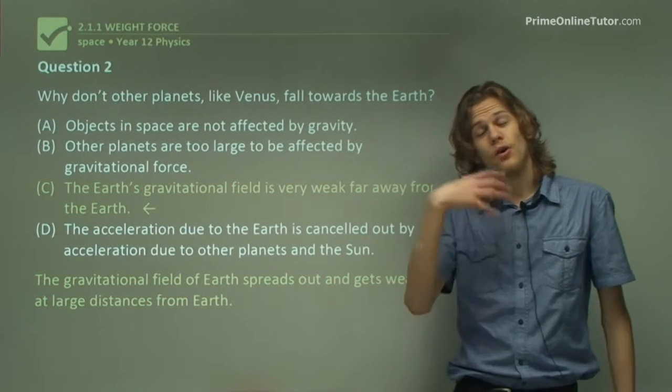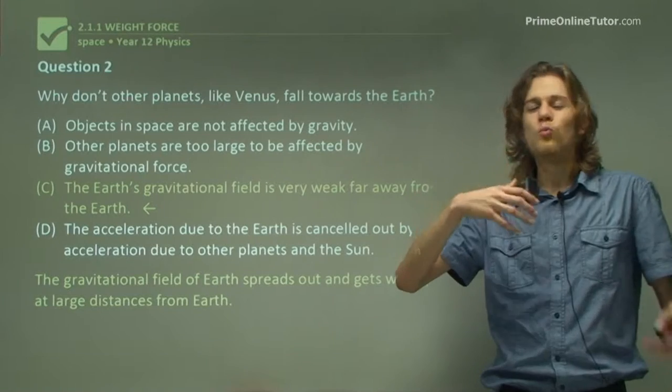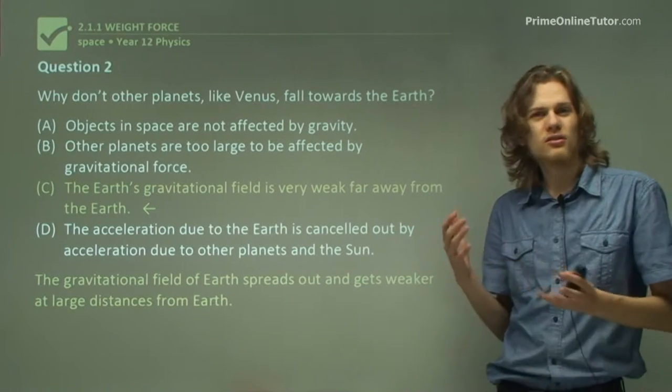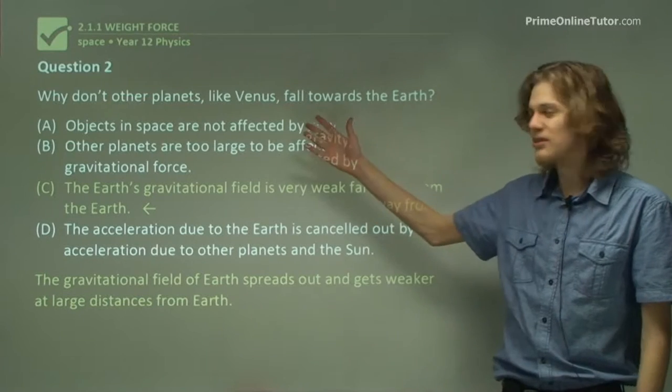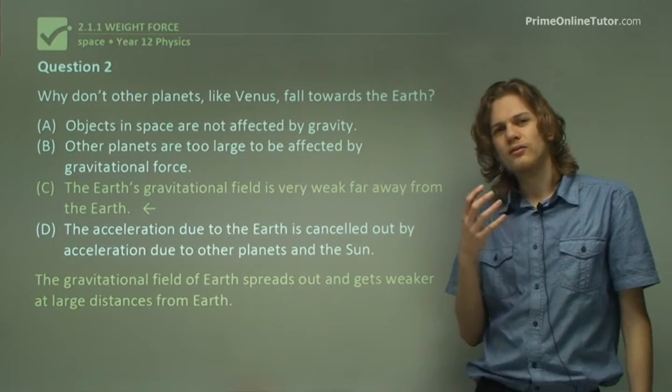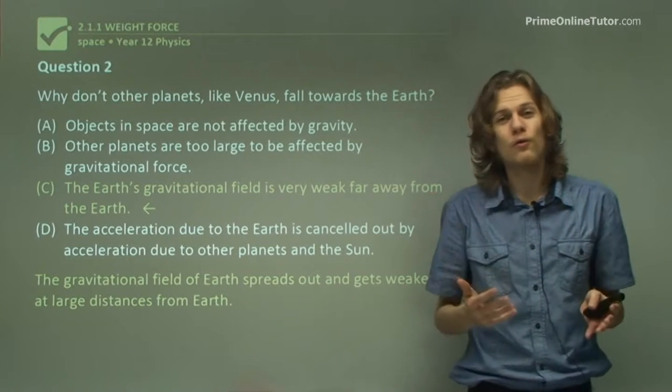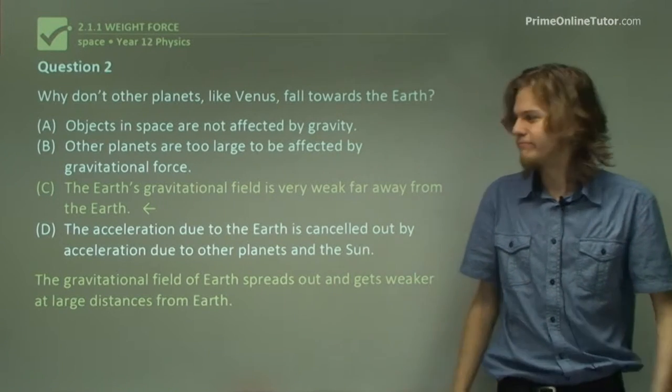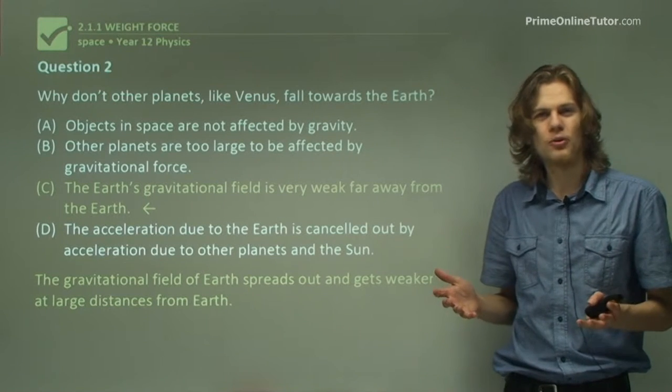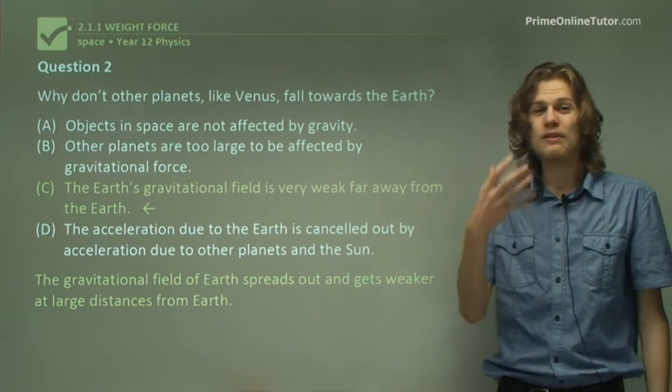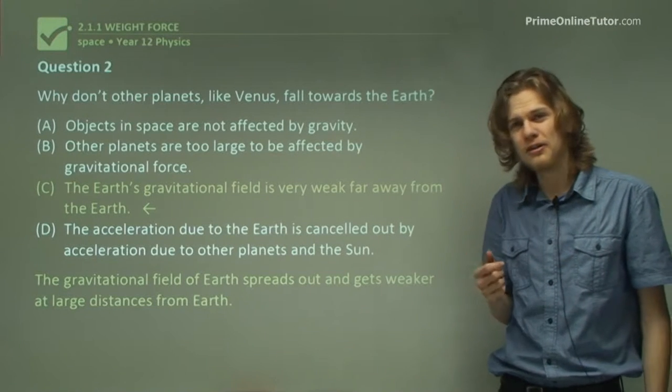So it turns out that the further away you get from Earth, the weaker the effects of its gravitational field are. When you get to a distance as far away as, say, Venus, then the gravitational field is so weak that it has practically no effect on the motion of Venus. And, of course, Venus is the closest planet to ours, so other planets that are even further away would have even less of an effect.